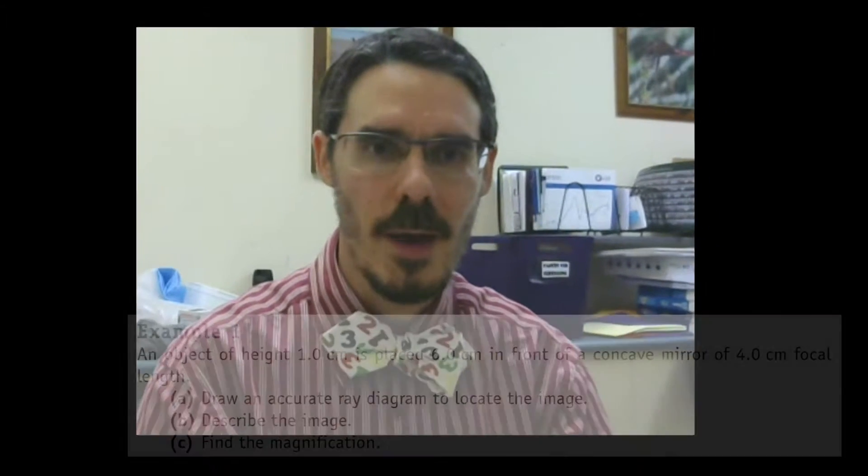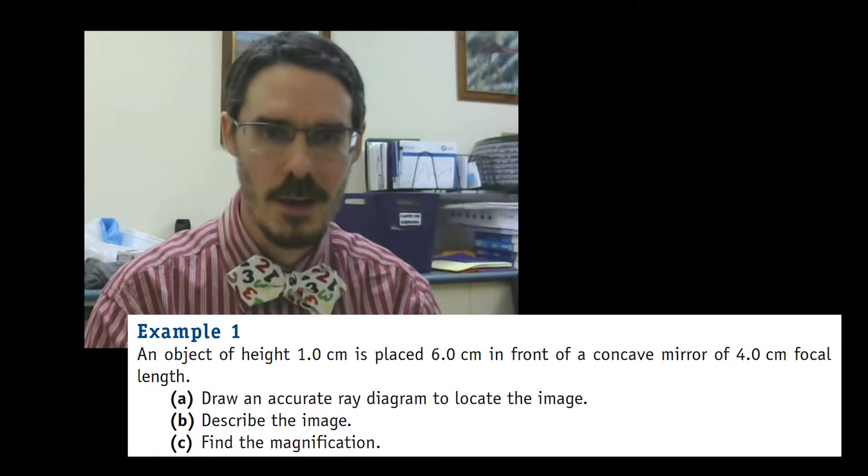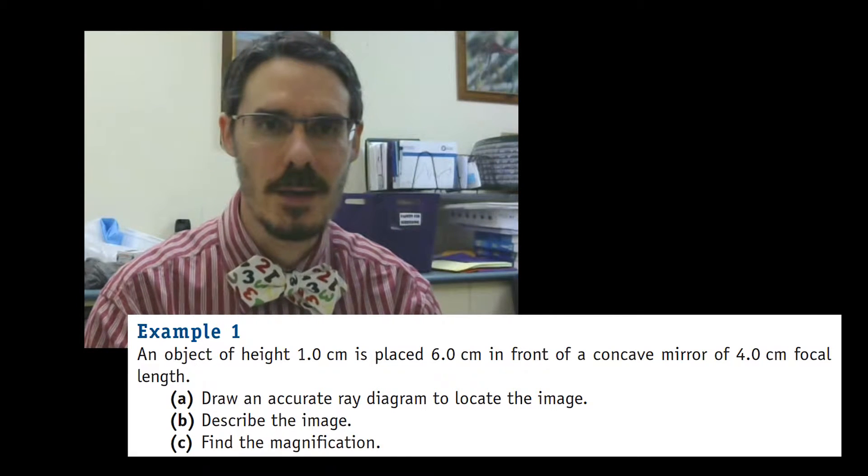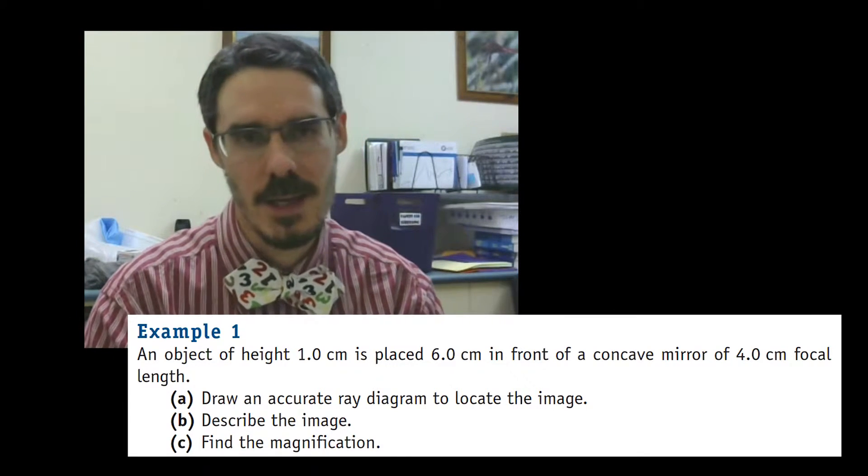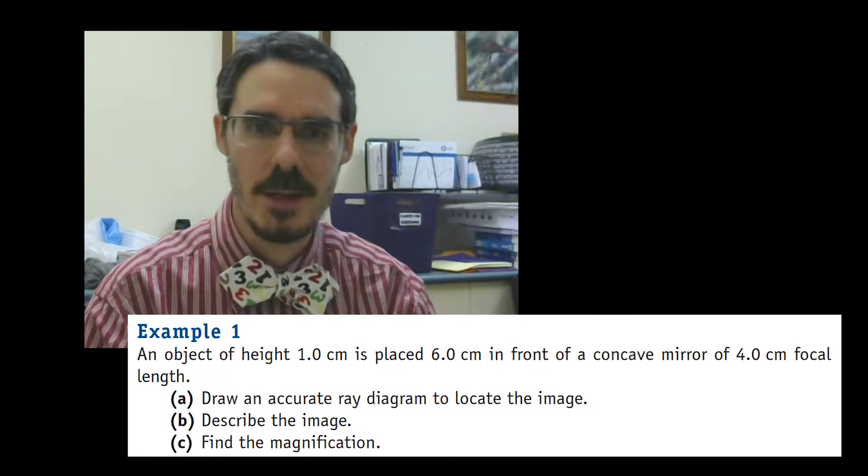So here's an example for finding and describing the image in a concave mirror. I'm actually going to use an example from the textbook. It's Example 1, Chapter 17, Curved Mirrors, actually under the heading Magnification, on page 391 in the New Edition.